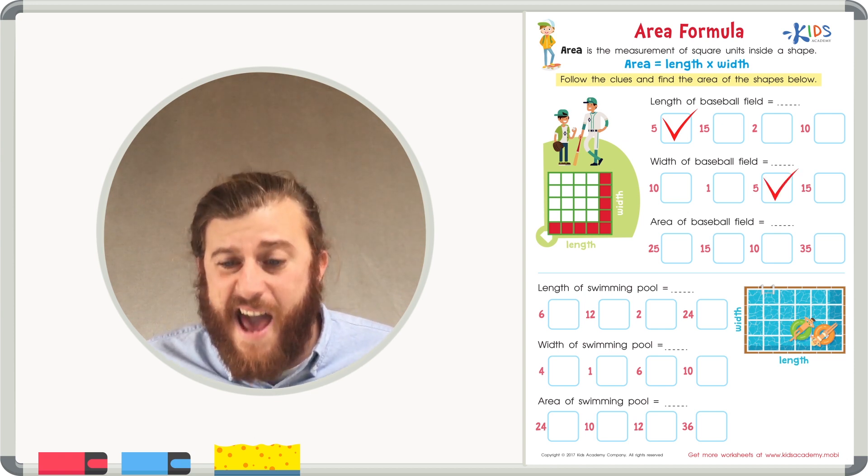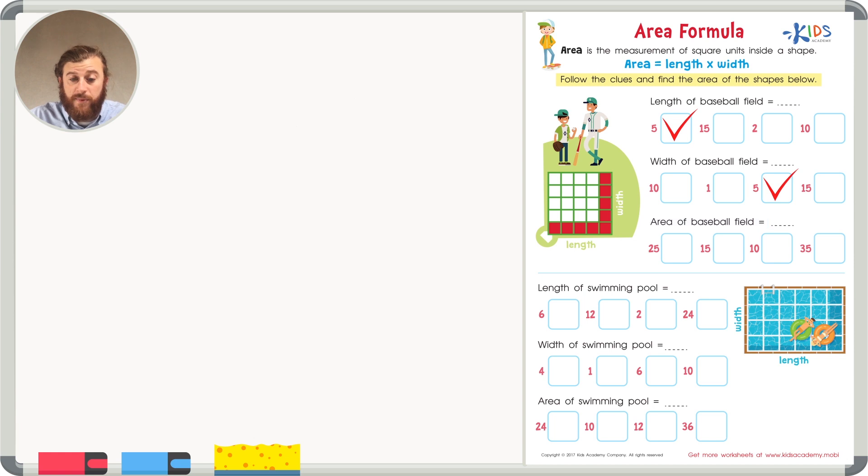So what is the area of the baseball field? Well, we can just simply multiply five times five instead of counting all the other boxes. Five times five is simple. Let's skip count by fives five times. Five, ten, fifteen, twenty, twenty-five. The area of this baseball field is twenty-five square units.